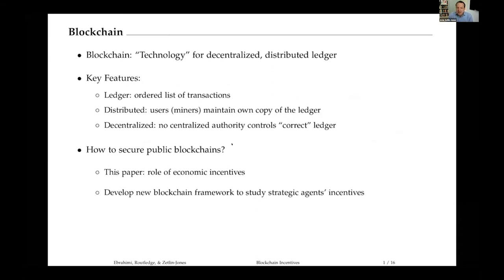In this crowd, I don't think I need to dive too much into this, but we all understand blockchain is a technology that lets us maintain a decentralized distributed ledger. By ledger, we just mean an ordered list of transactions. On a blockchain, transactions are batched together into a block, and then they're ordered by chaining blocks to previous blocks. It's a distributed ledger in the sense that miners maintain their own copy of the ledger, and it's decentralized in the sense that no centralized authority controls which version of the ledger is correct.